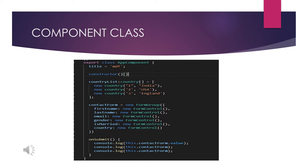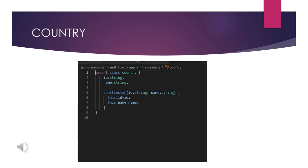On the onSubmit handler, I am logging the contactForm values. The contact form defined above handles all the outputs. Compared to template-driven forms, I have one extra class here — the Country class — which has two properties: id and name, both of type string. The constructor takes id and name and assigns them using this.id and this.name. This class is used to populate the country list data.